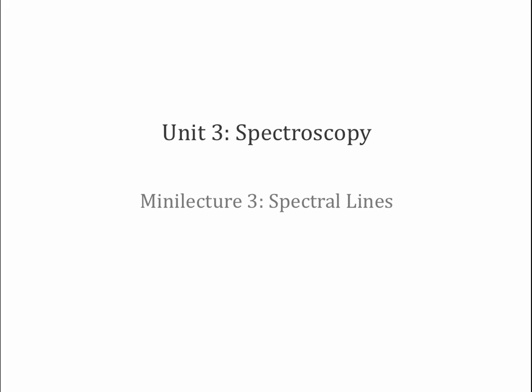Welcome back. In our mini lectures last week we talked about the electromagnetic spectrum, some of the properties of light, especially the wave properties of light, and we talked about black body spectra. This week we're going to delve even further into what light can tell us, and we're going to begin by talking about spectra in more detail. In particular in this mini lecture we are going to cover spectral lines, both where they come from and what they can tell us.